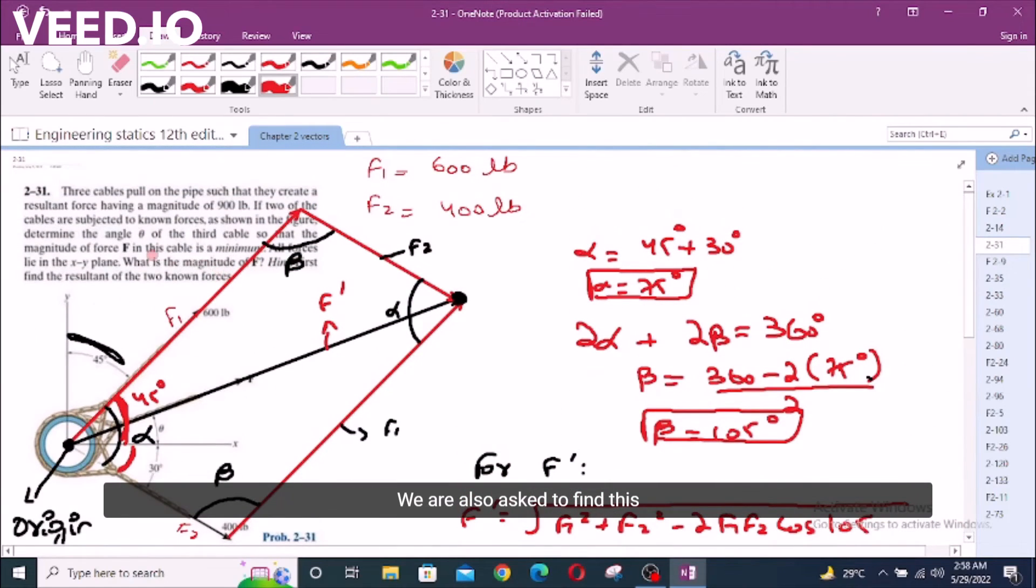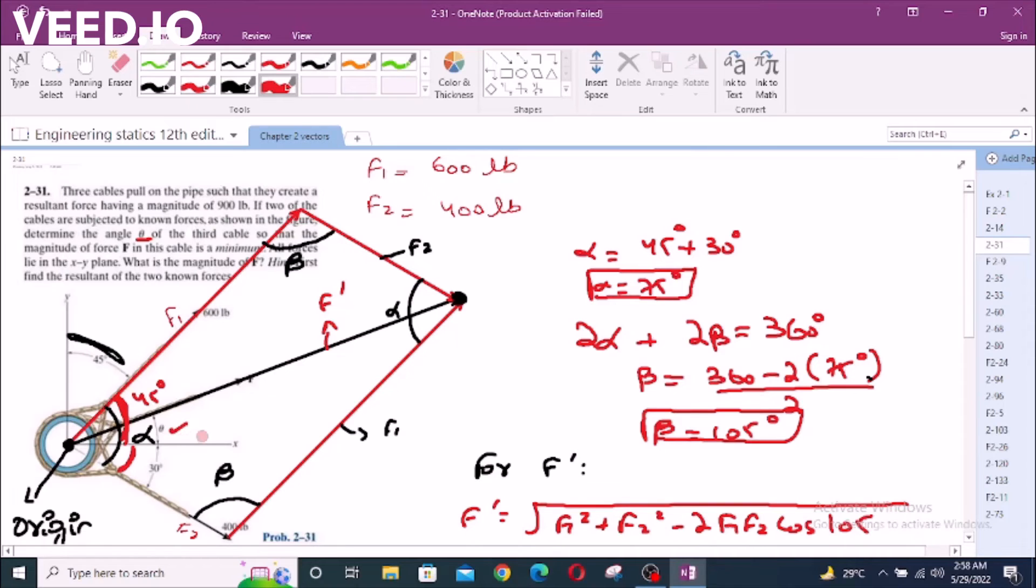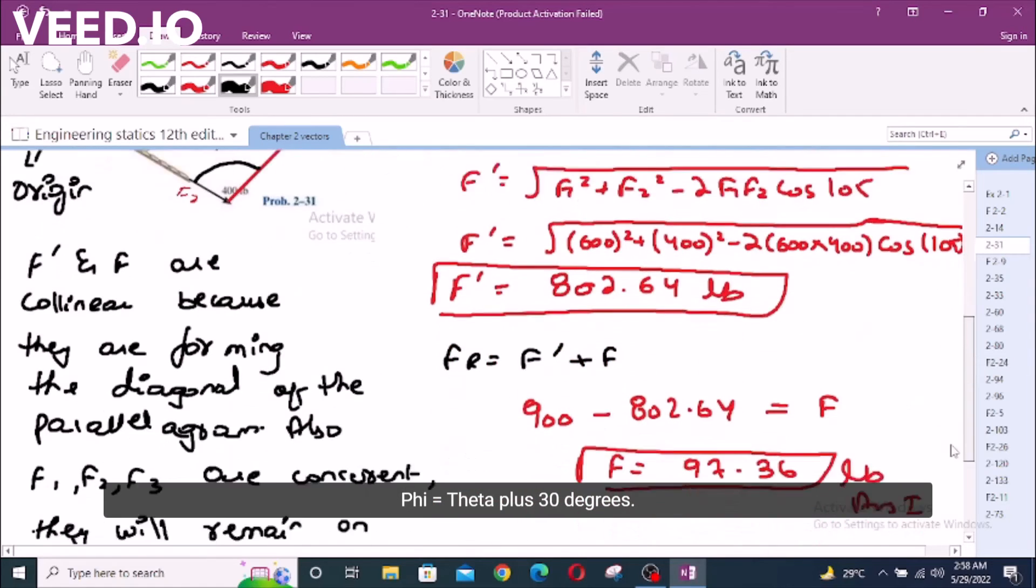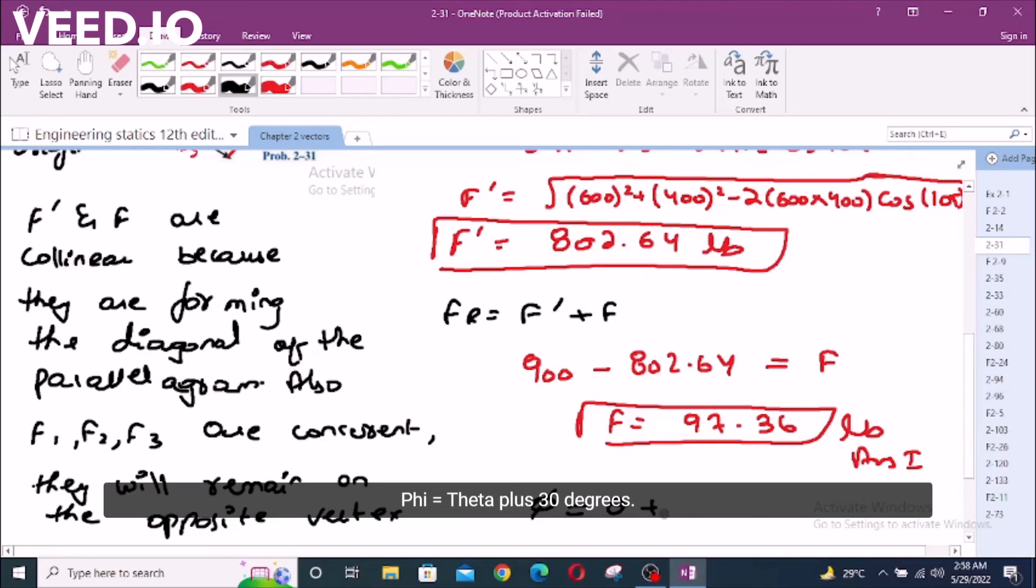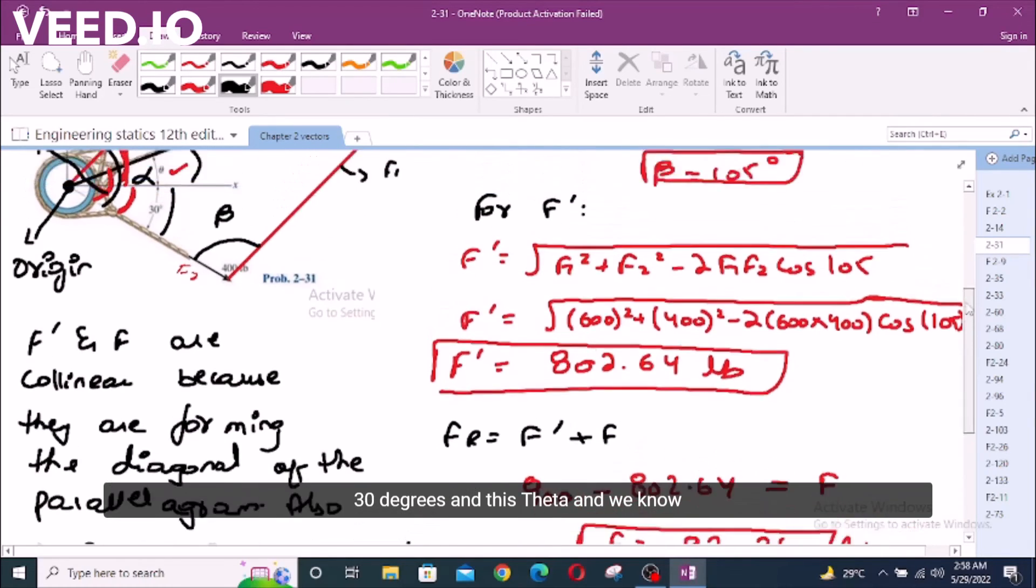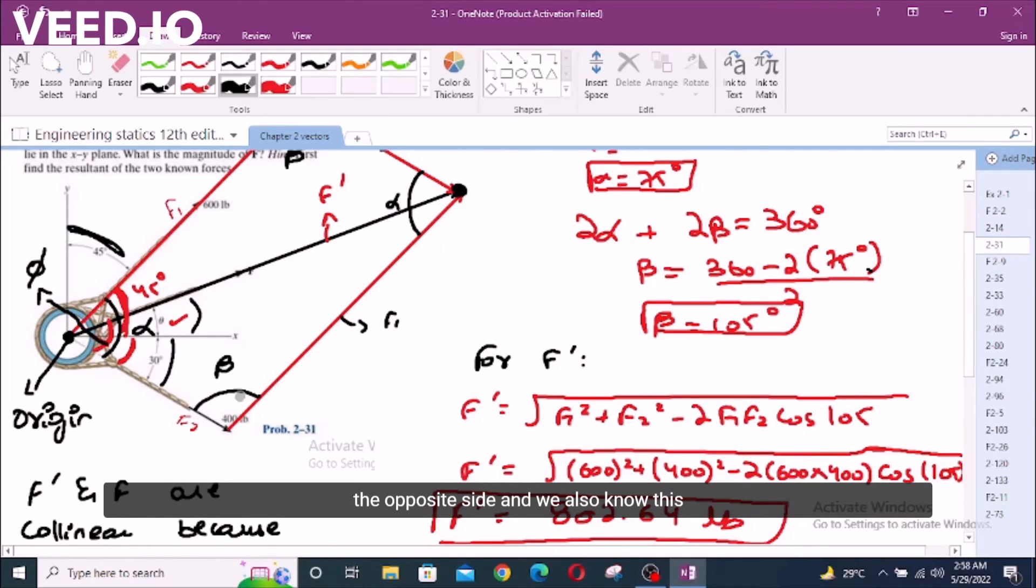We are also asked to find this angle theta which is right here. Now we can say that if I select an angle, let's see this. I am drawing it right here. This angle is, let's call this phi. And we know the opposite side and we also know this angle and the opposite side, so we can use here sine law.